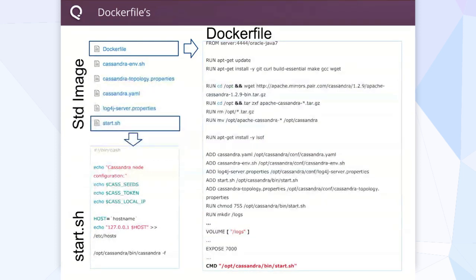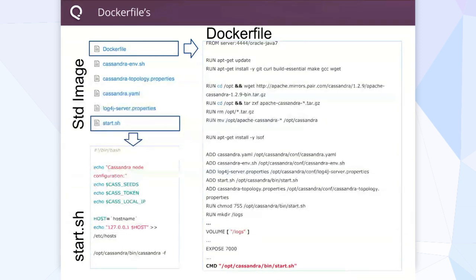This is almost a complete Dockerfile. The key thing to point out is starting processes within the container — we ended up using a start script instead of just starting, say, Cassandra directly. The reason is if we need to do prioritization: for Hadoop, for instance, you need to run the SSH daemon before you can actually run Hadoop, because it uses SSH to talk to its other nodes. For that we use a supervisor, which gives you that capability.